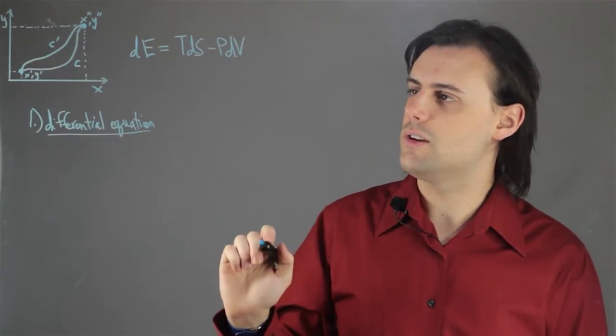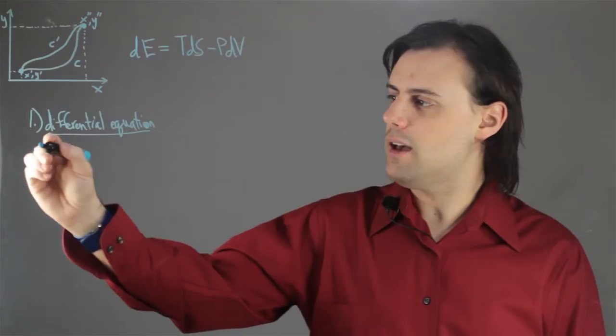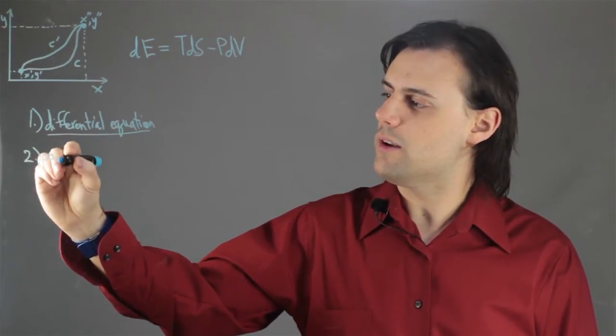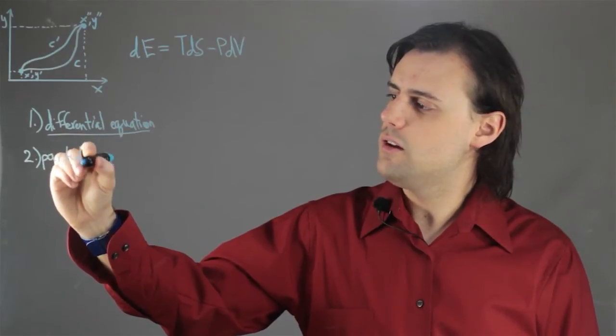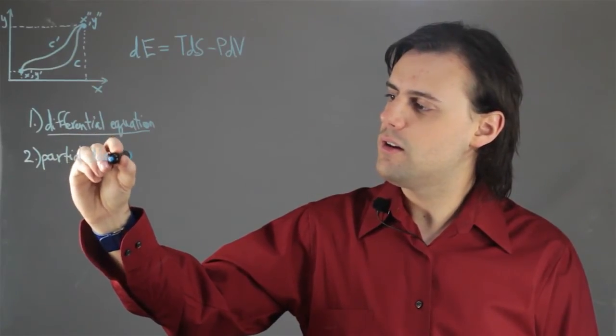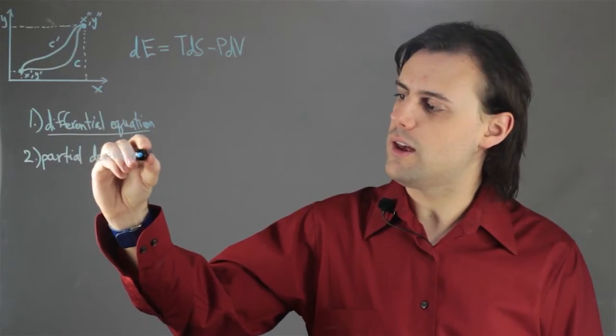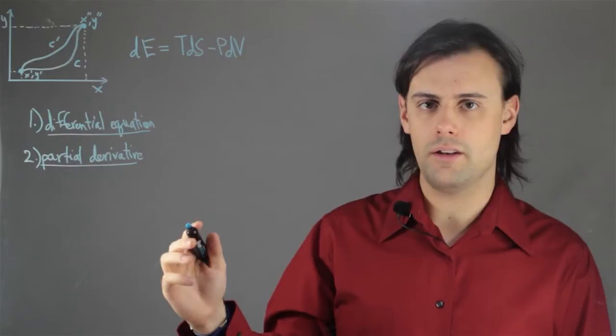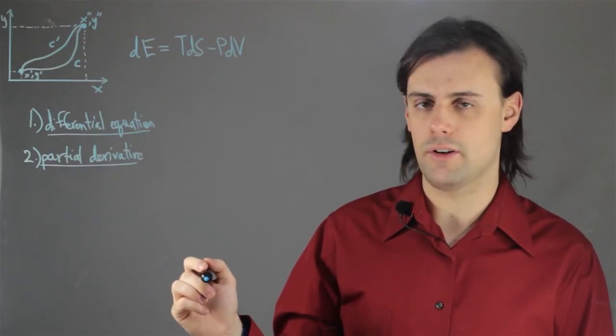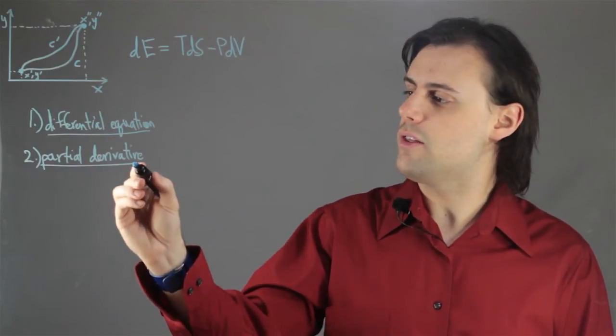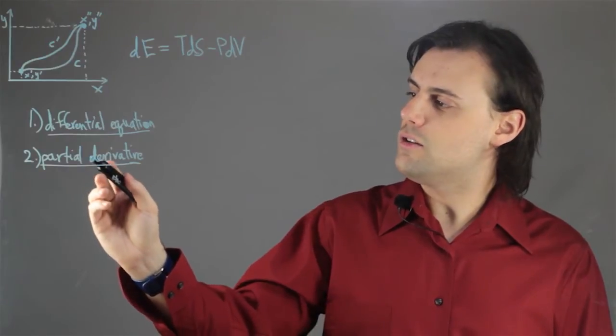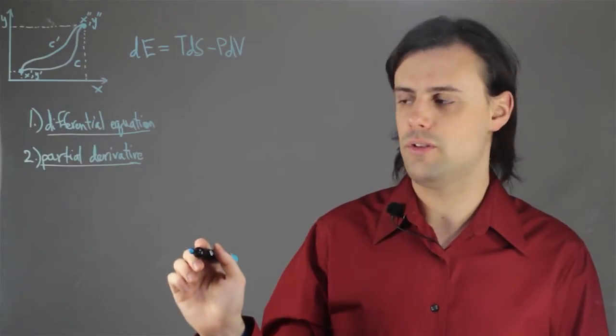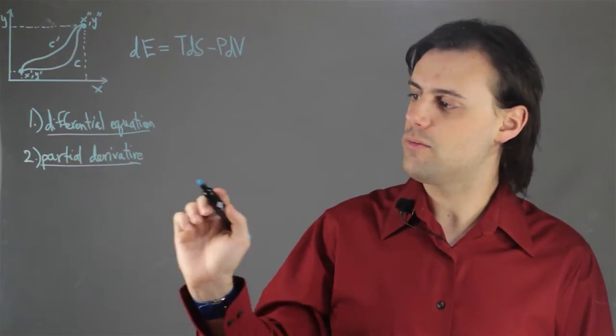And a second mathematical method is that of partial derivatives. So a partial derivative is a type of derivative that you would take of a particular function that is dependent on multiple different parameters or variables, and you just want to see how that function changes with respect to one of those variables.